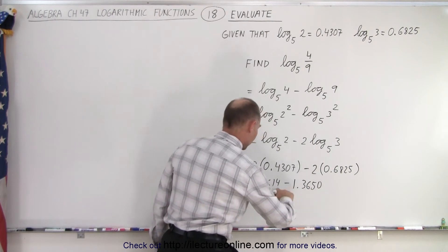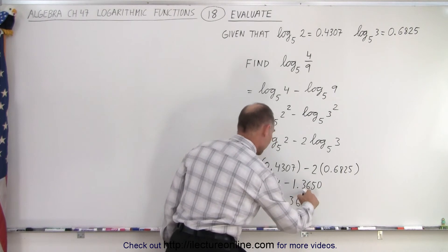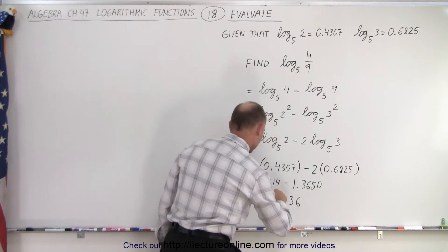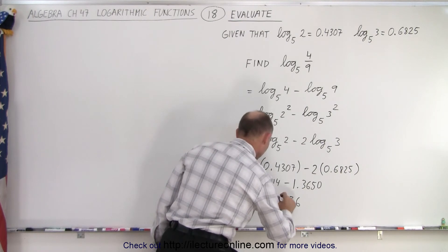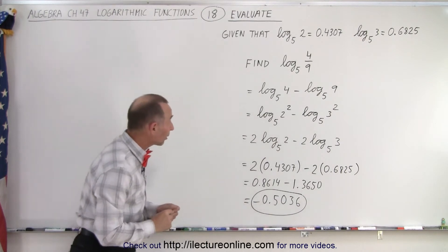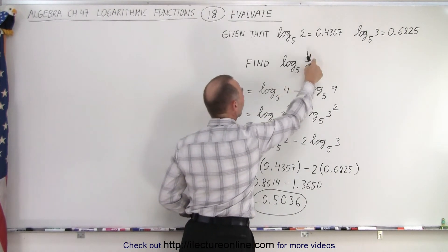Notice 0 minus 4, that gives us a 6. 4 minus 1 gives us a 3. 6 minus 6 gives me a 0. And 13 minus 8 gives me a 5. And there you go. There's the resulting number we're looking for, and that is equal to the log base 5 of 4 over 9.